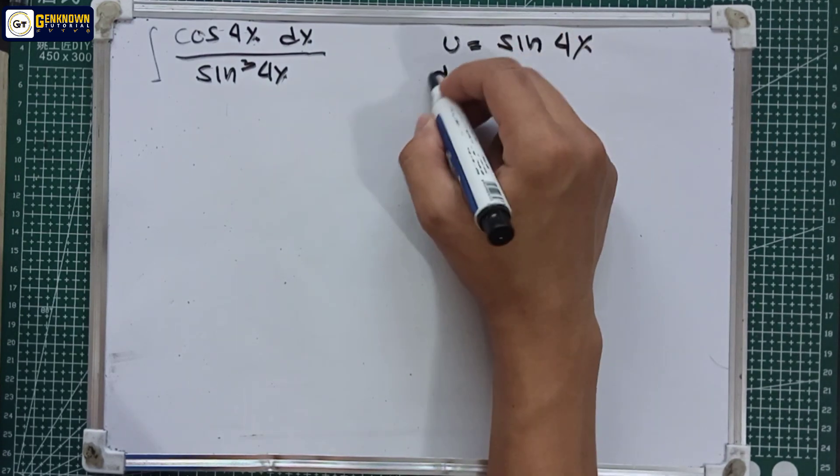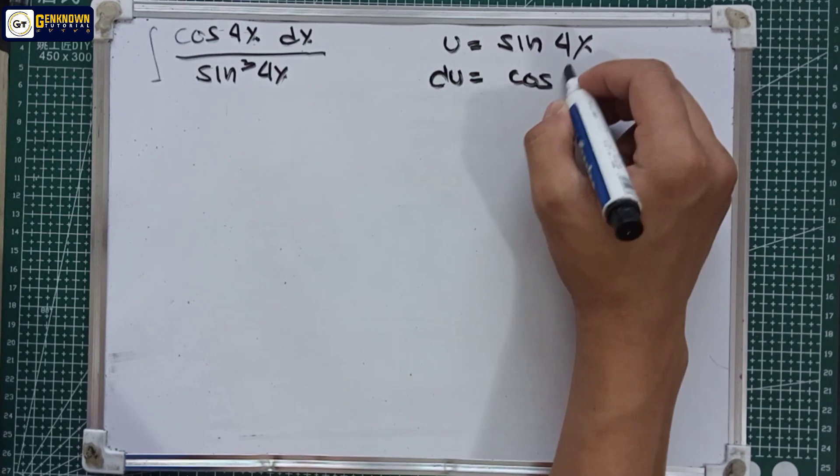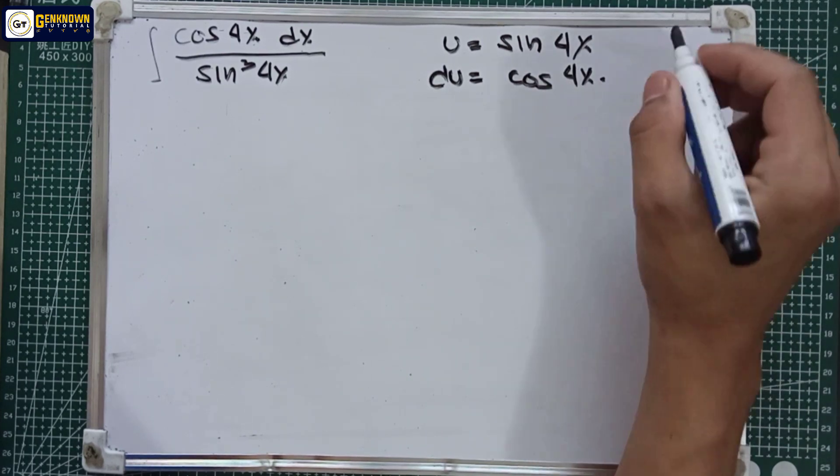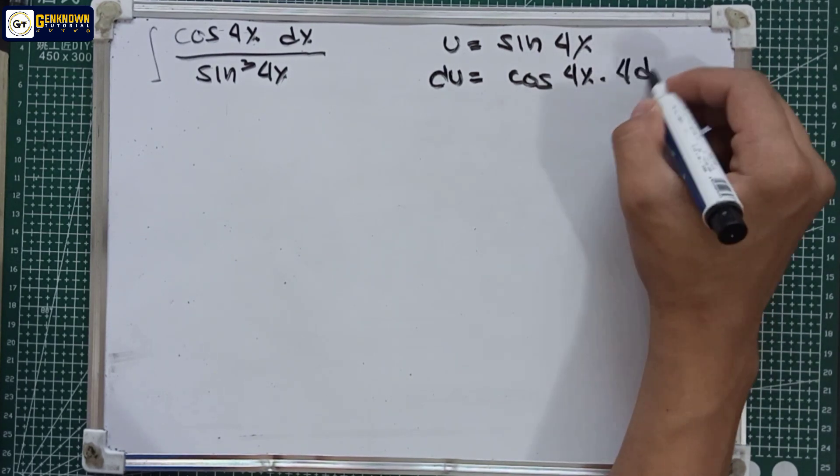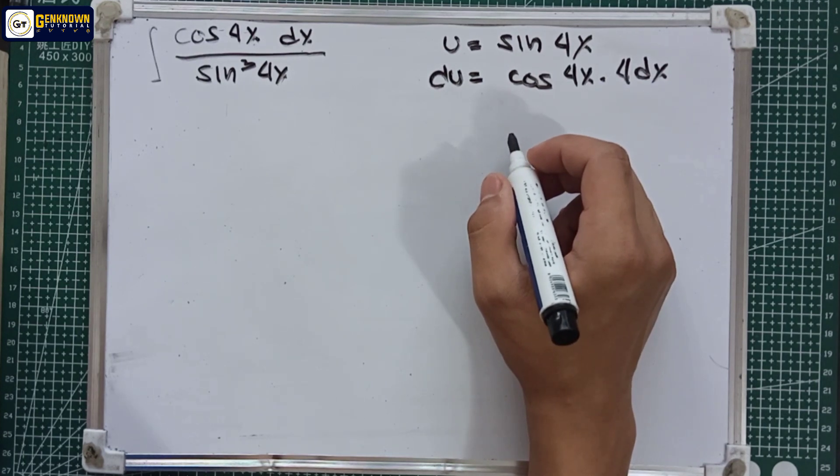Taking the derivative, we have du equals cosine 4x multiplied by the derivative of 4x, which is 4 dx. So the neutralizing factor is 4.